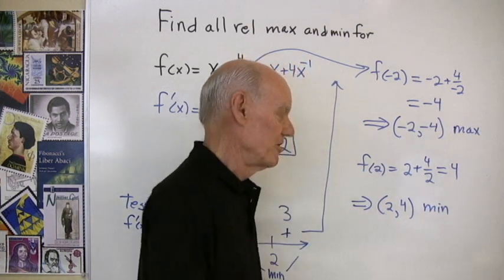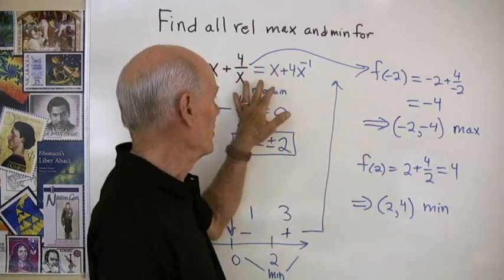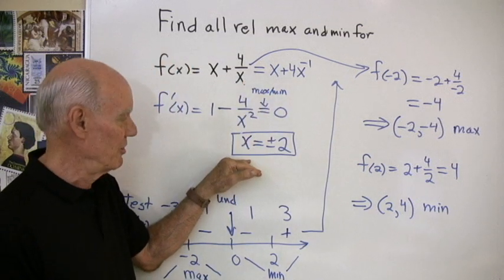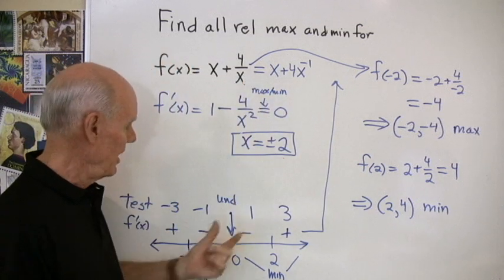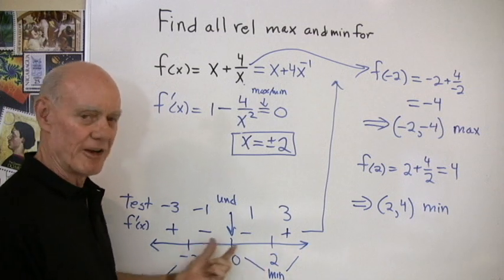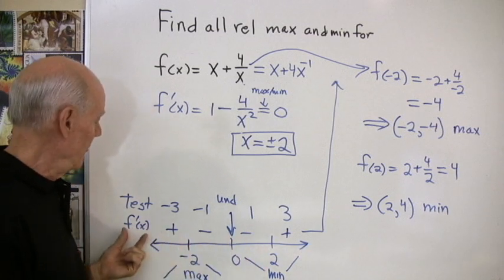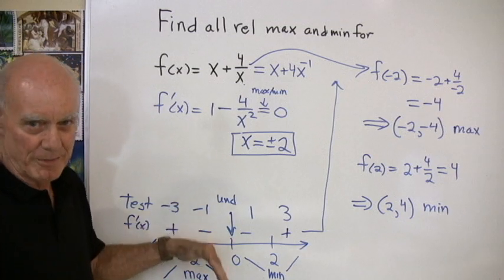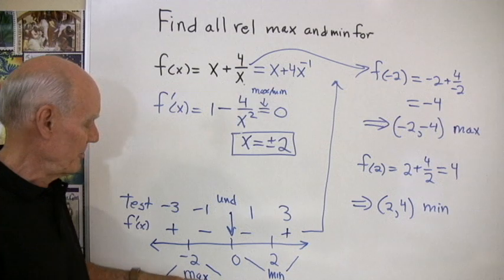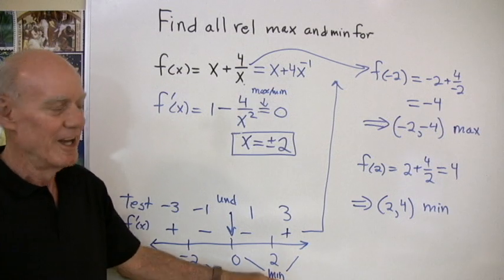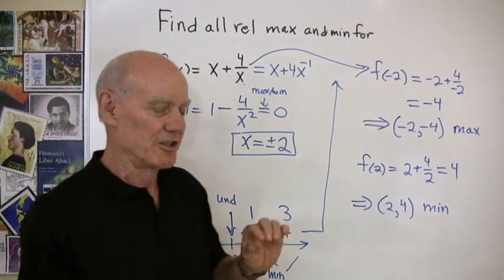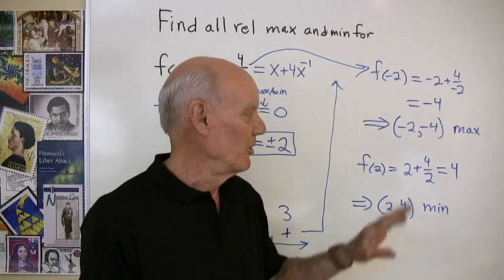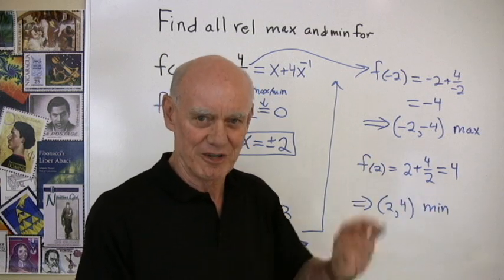So I found my relative maximum and relative minimum for this graph by taking the first derivative, setting it equal to 0, finding those critical points, and then using this graph to see where the first derivative is positive or negative, so I can tell if the graph is going up and then down, or down and then up. That tells me I have a maximum or a minimum. Now, let's go to the computer and actually take a look at the graph of this function to see if it coincides with what we've done.